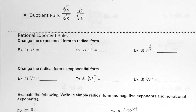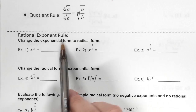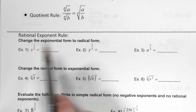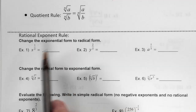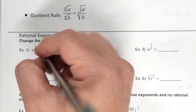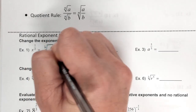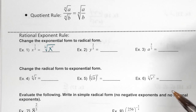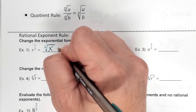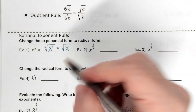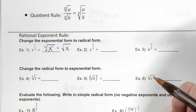Looking at the first example — rational exponent rule, change the exponential form to two radical forms. Exponential just means it has an exponent. Which number is my root? Two. And which number is my exponent? One. Do I have to label a square root with a two? No. Do I have to label an exponent with one? No. So is this the same thing as just writing the square root? Yes.